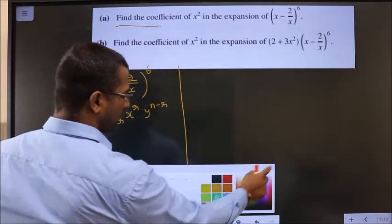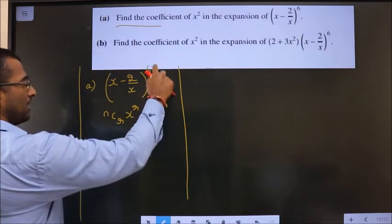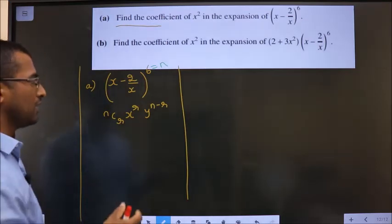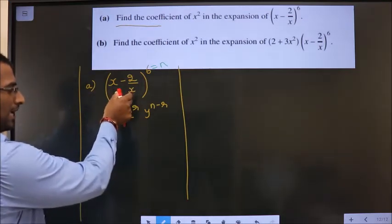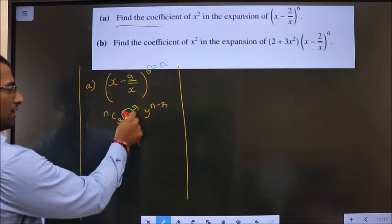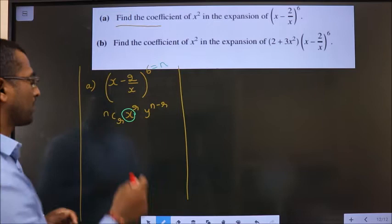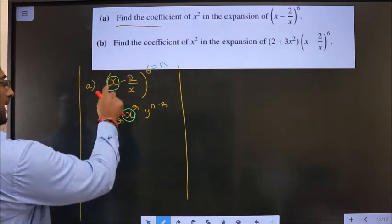Now, in place of n, what will you take? You will take the power. In place of x, what will you take? Inside the bracket, the x term should be taken for x. Here, both of them have got x, so you can select any one of them. I select this to be x.